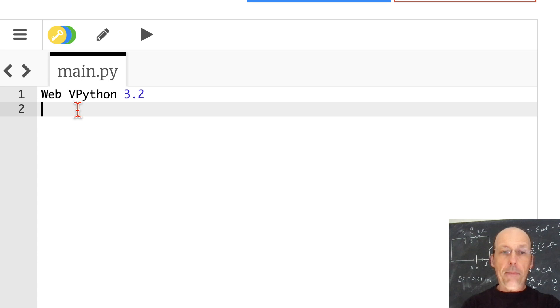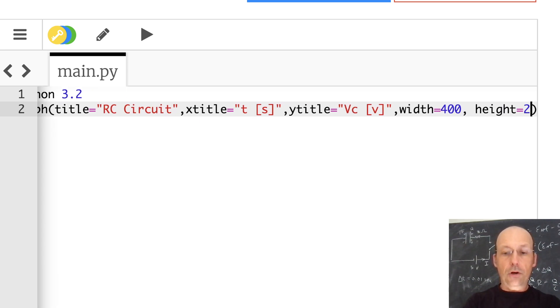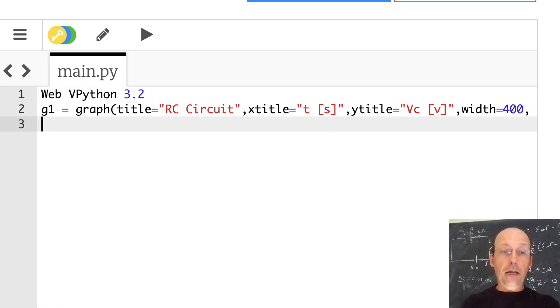I am using WebVPython just because it's online and it's good for graphing. Let's just go ahead and make a graph. We're going to make a graph. I want to make a graph of the voltage across the capacitor as a function of time. So G1 equals graph. Title equals RC circuit. X title is time in seconds. The Y title is going to be equal to VC in volts. And then I'm going to give it a width of 400, a height of 200 just so it fits on the screen.